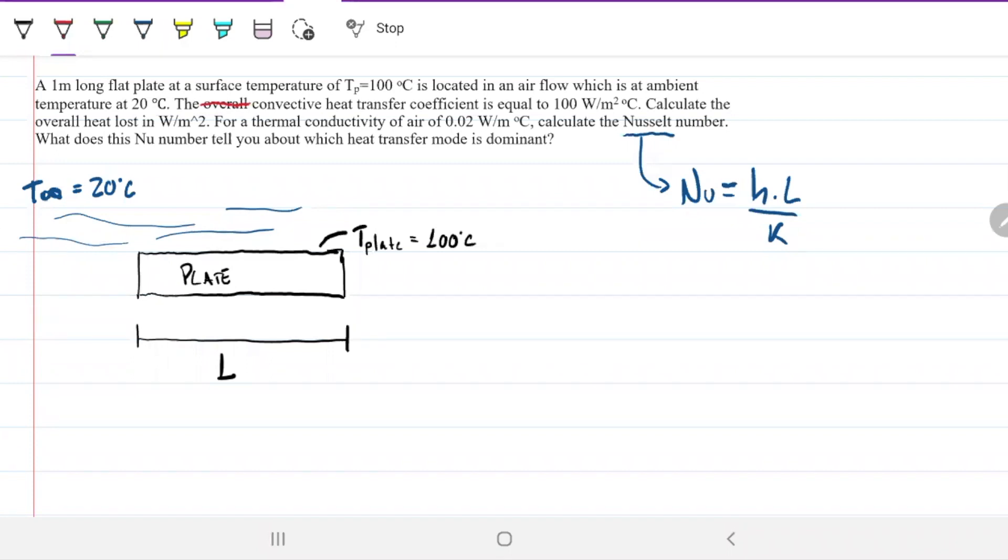Calculate the overall heat loss in watts per meter squared, so that's heat flux. For a thermal conductivity of air of 0.02, calculate the Nusselt number. What does the Nusselt number tell you about which heat transfer mode is dominant?